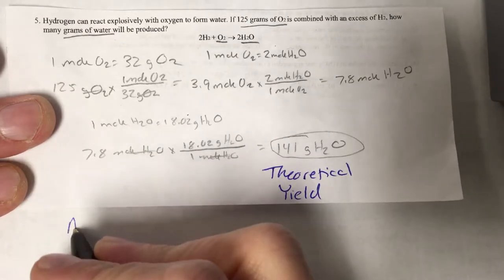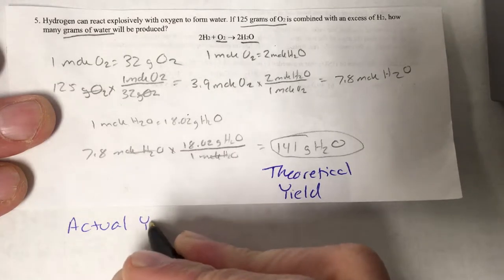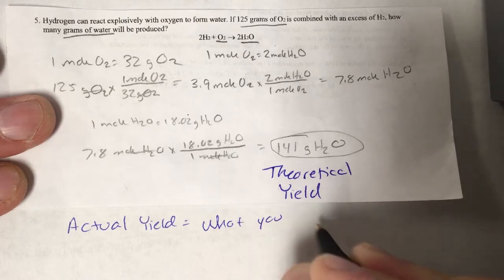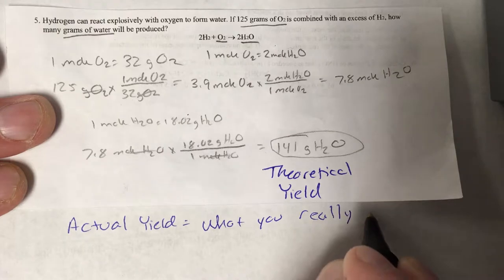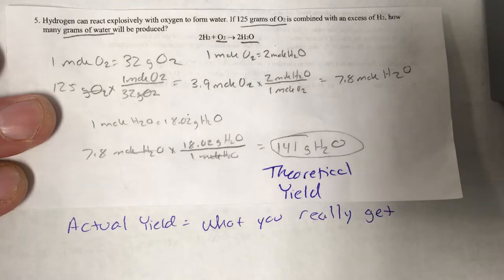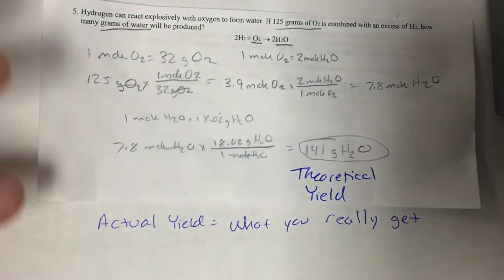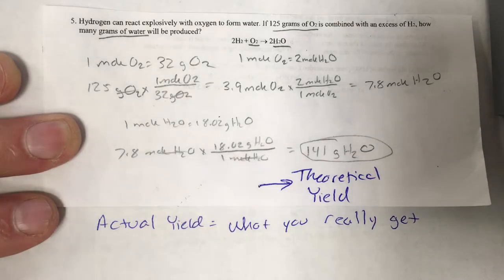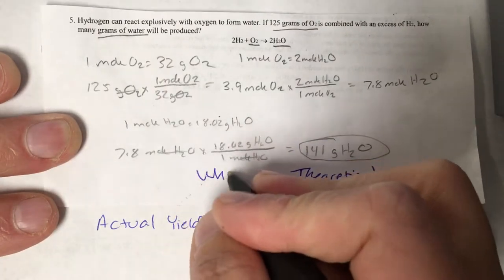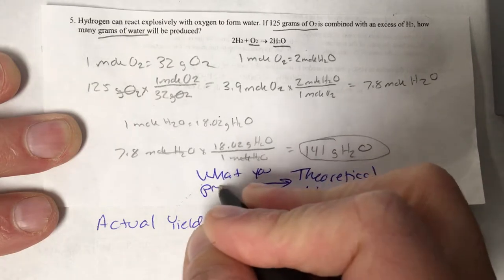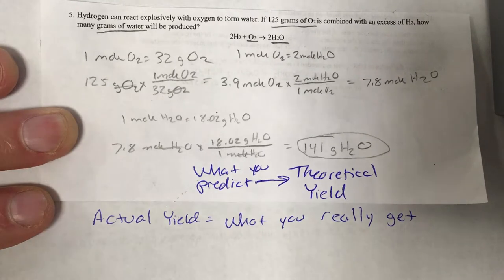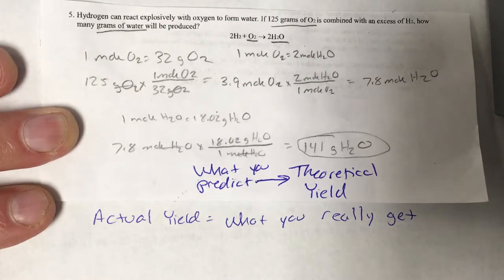So theoretical yield - sorry, there we go - theoretical yield, what you would hope to get, what you predict. An actual yield is what you would actually get in your real experiment if you actually ran that reaction and measured how much product you made.